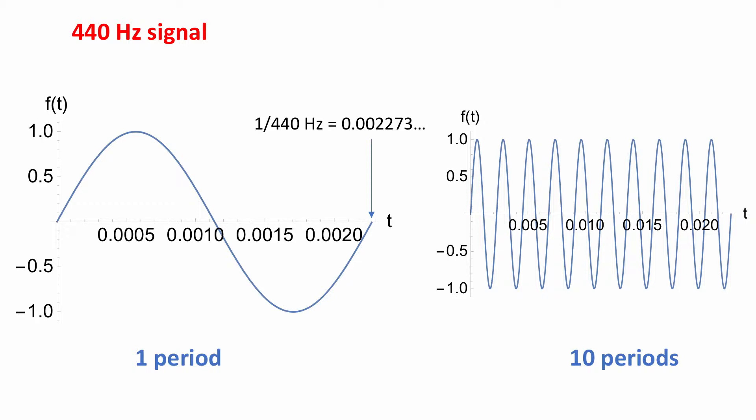So I've plotted here a simple sine wave, it's 440 hertz frequency, and so one period is about 0.002 seconds. And of course this is a single tone in terms of sound, so the signal continues beyond one period, so if you go to 10 periods you get the graph on the right, and so on. And so if you play the 440 hertz signal, this pure tone sounds just like this.